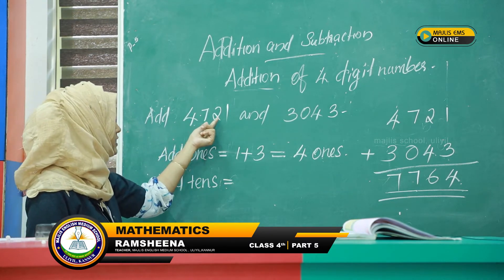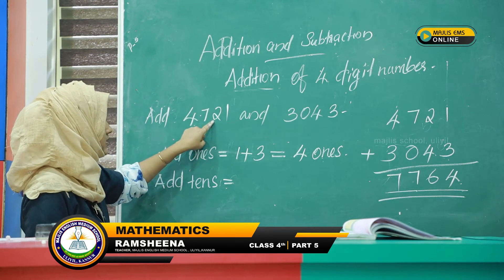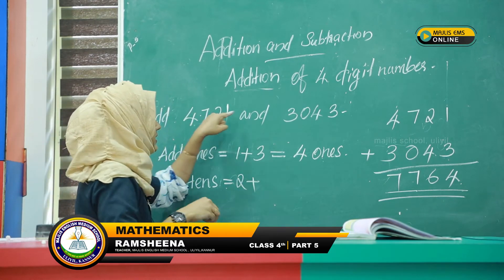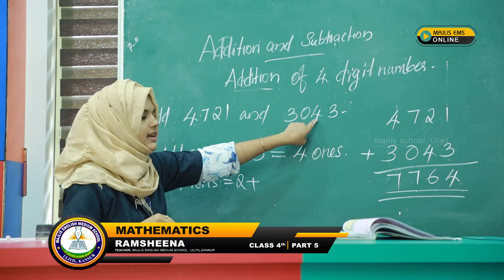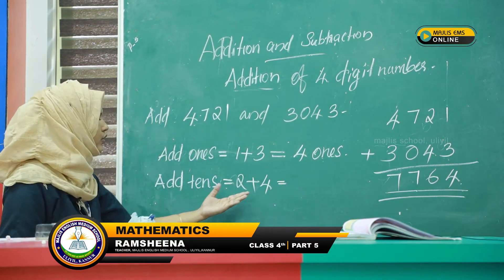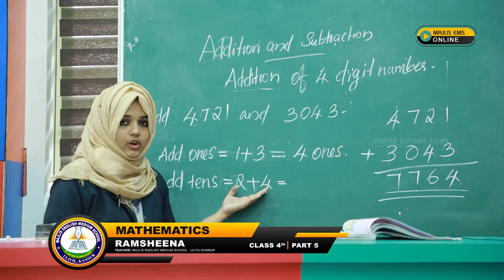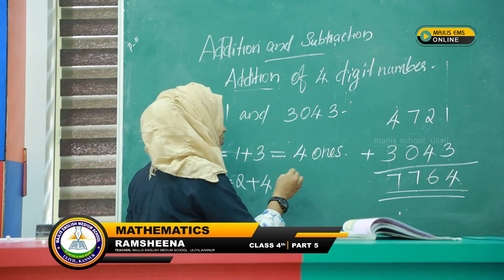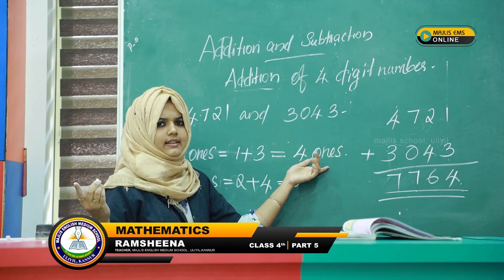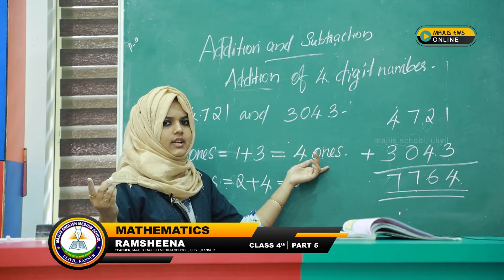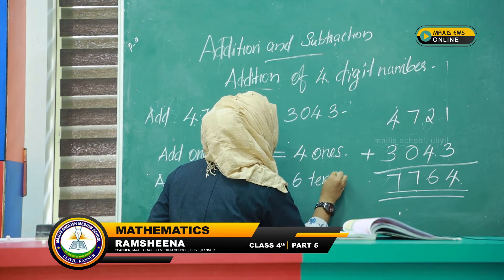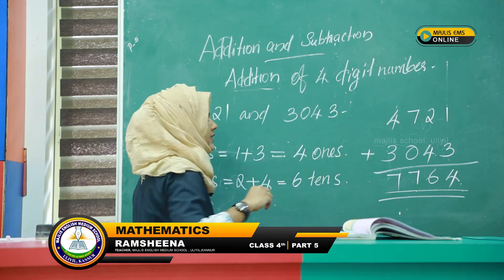Then which number is in the tens place? The number 2 plus 4 is equal to 6. That is 6 tens.